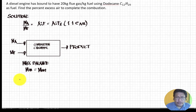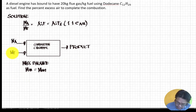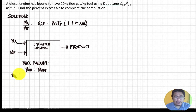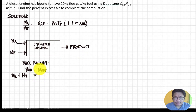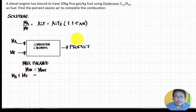What enters the system is the mass of air and the mass of fuel, so we write: mass of air plus mass of fuel equals the products, which is the mass of flue gas.